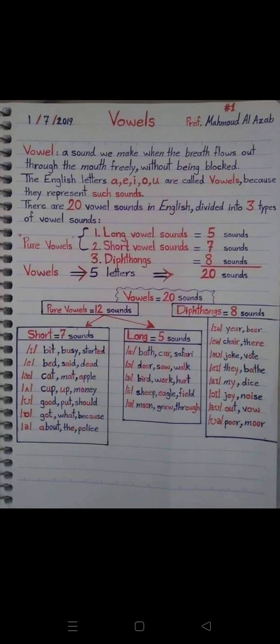Vowels. A vowel is a sound we make when the breath flows out through the mouth freely without being blocked. The English letters A, E, I, O, U are called vowels because they represent such sounds. There are 20 vowel sounds in English divided into 3 types: pure vowels and diphthongs.